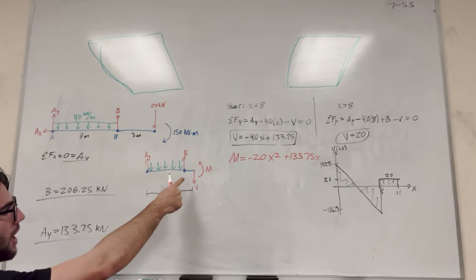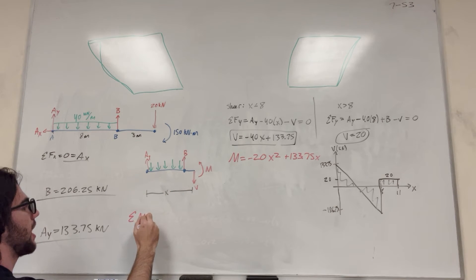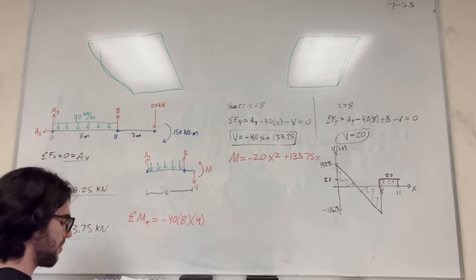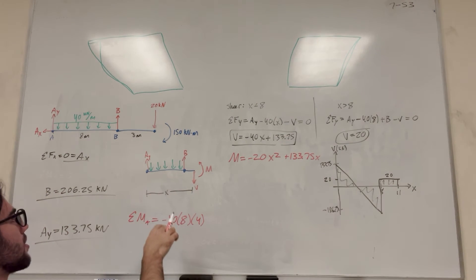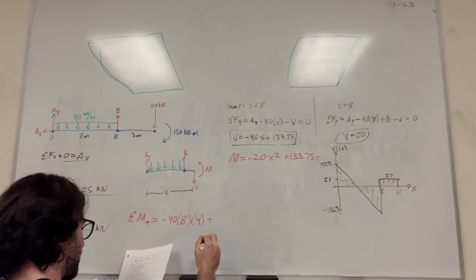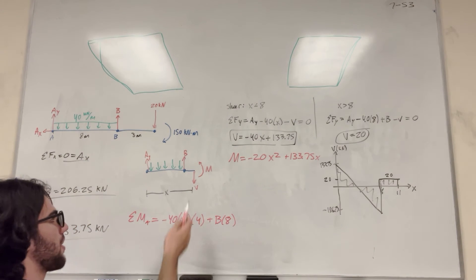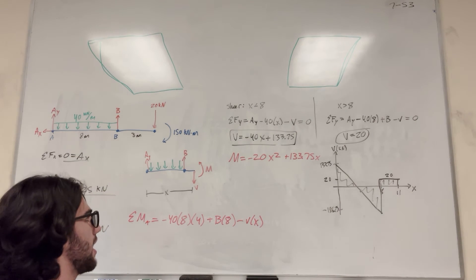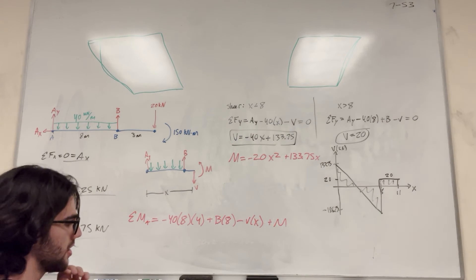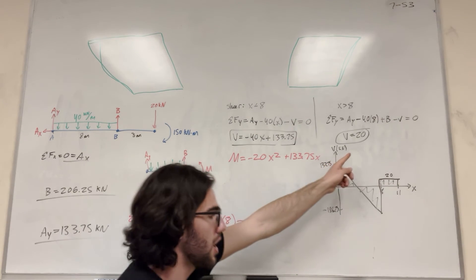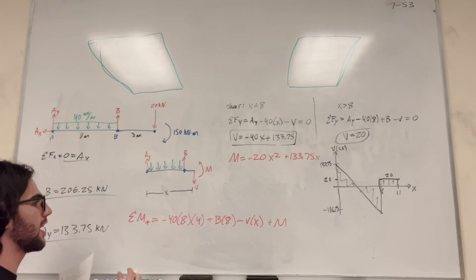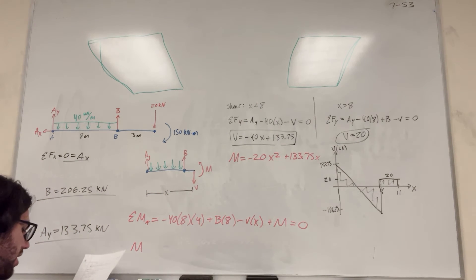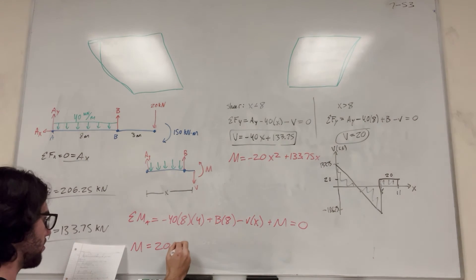After we pass eight meters, taking the sum of the moments around A again: negative 40 times eight times four for the distributed load, then plus B times eight since B pushes upward, then minus V times its distance away, plus moment M, all equal to zero. Plugging in V equals 20 for this region, then solving for M, you end up with M equals 20X minus 370.